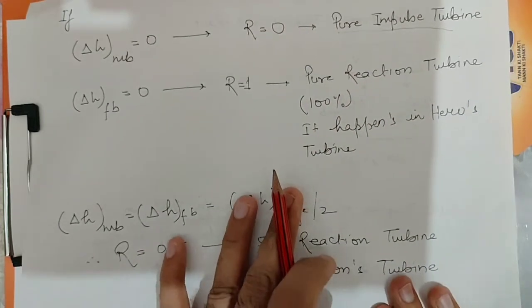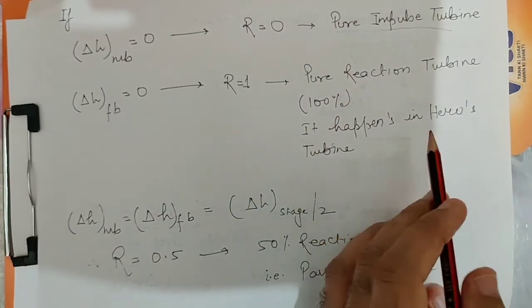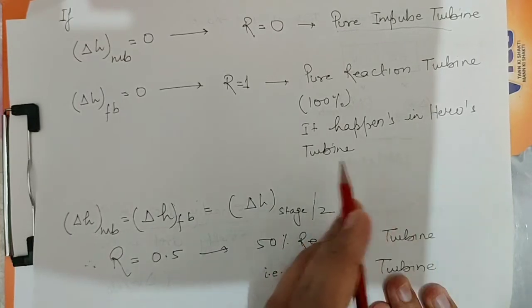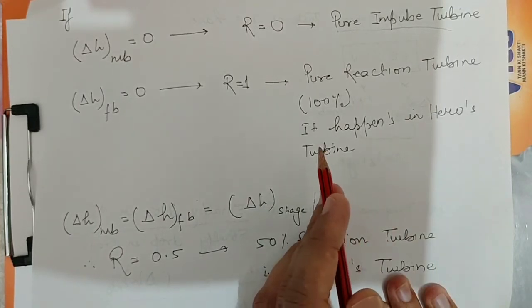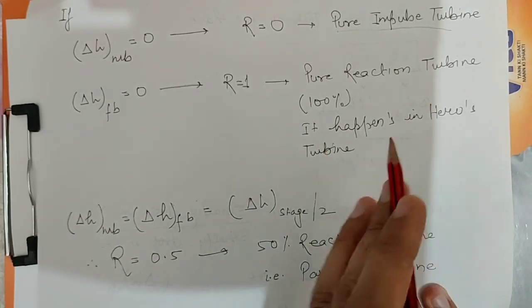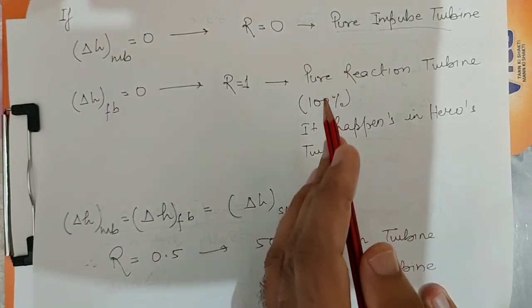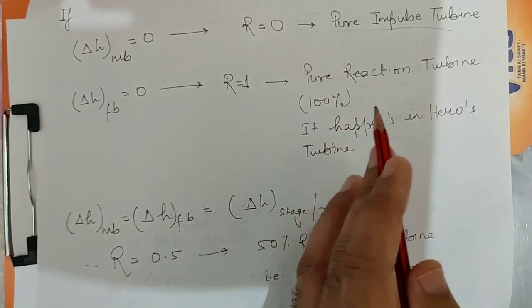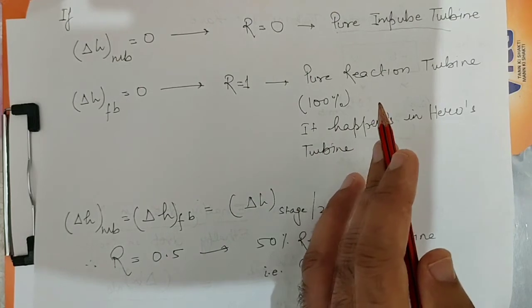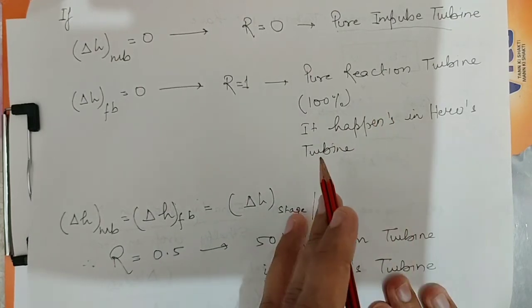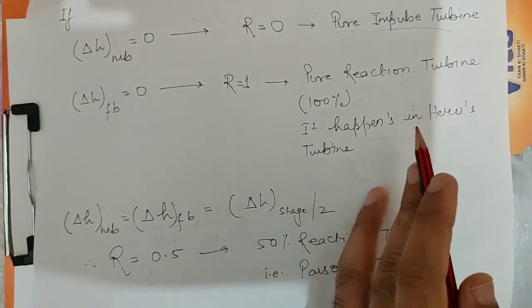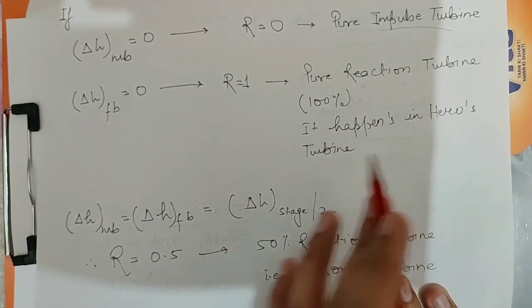This 100% degree of reaction case occurs in Hero's turbine. The turbine in which there is 100% degree of reaction is called Hero's turbine.